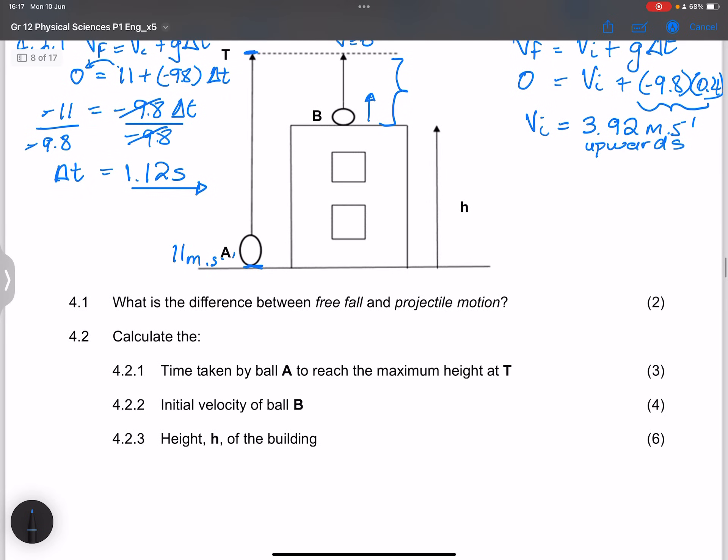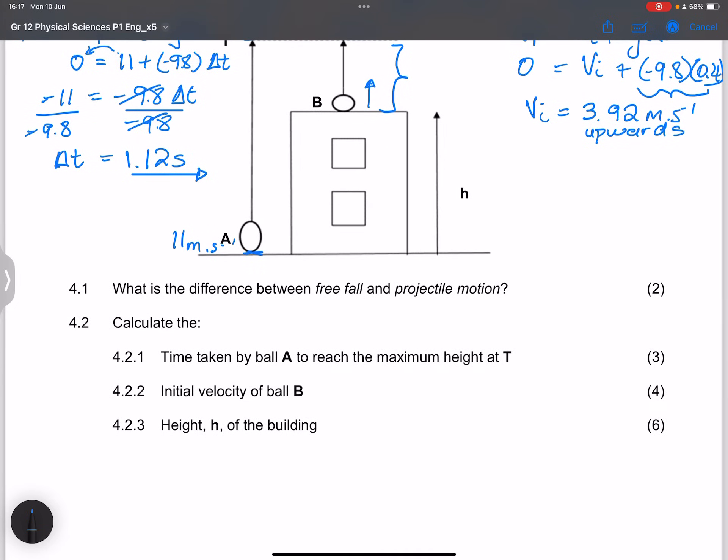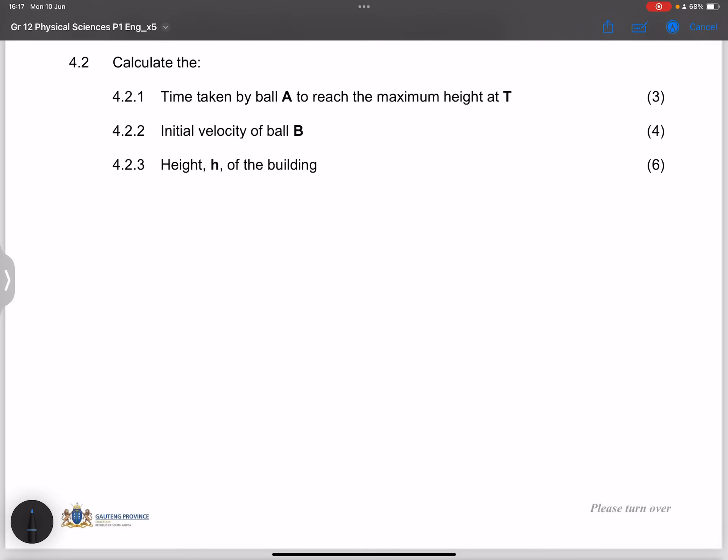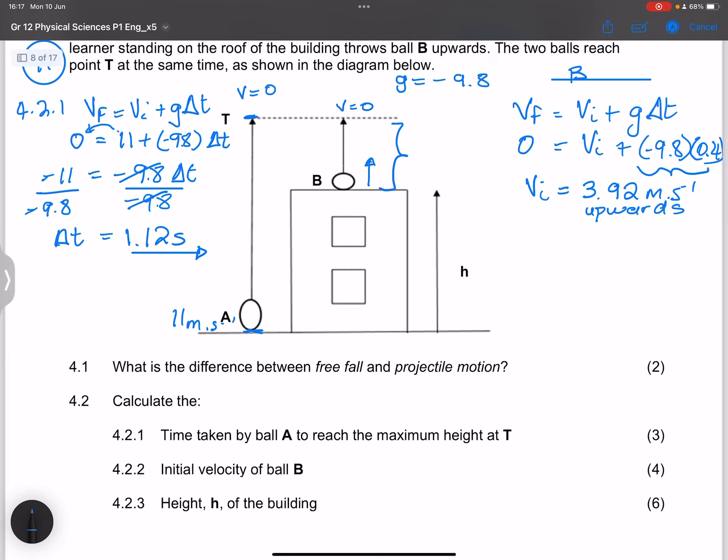So finally, they said calculate the height of the building. What I'm going to do there is, let's talk about the displacement for ball A. If I took the displacement for ball A till maximum height and I take the displacement for ball B till maximum height and I subtract them from each other, this displacement here minus that displacement there would actually give me the displacement or rather the height of the building. So let's do that. Let's find out the displacement for ball A.